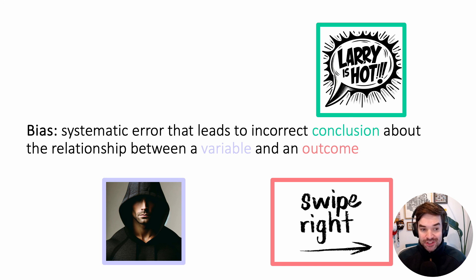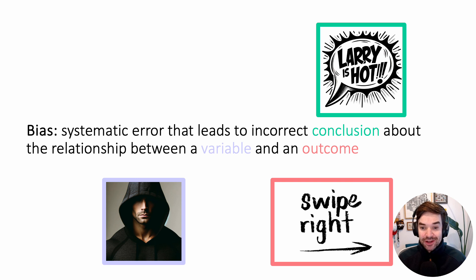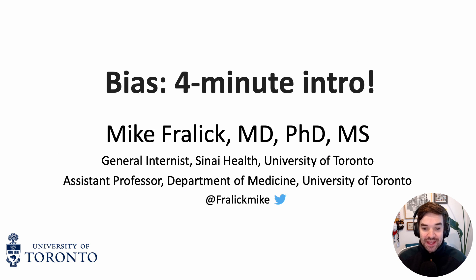To close off the talk: what is bias? It's a systematic error that leads to an incorrect conclusion — 'Larry's hot' — about the relationship between a variable — these photos of Larry — and an outcome — you swiping right. I hope that helps. Leave comments and questions below. In another talk, I'll explain what confounding is, which is a topic I haven't delved into here and is very easy to mix up with other topics in epidemiology.